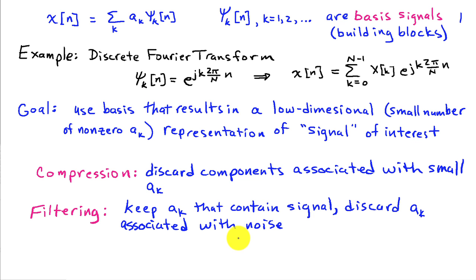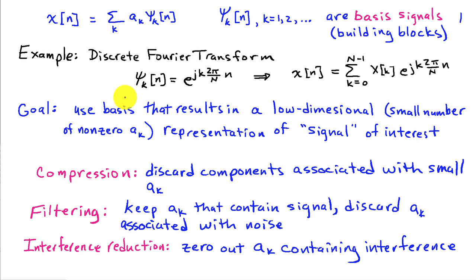The conventional notion of frequency selective filtering, where we have a pass band and a stop band, is somewhat built on this principle because if I interpret my bases in terms of, say, the DFT, where I have frequencies, I'm keeping some frequencies and I'm throwing away other ones. And lastly, we can talk about interference reduction, where if some of the ak's are associated with interfering signals and others are not, then by zeroing out the ones that are associated with interfering signals, we reduce the overall interference in the signal.